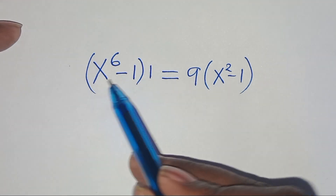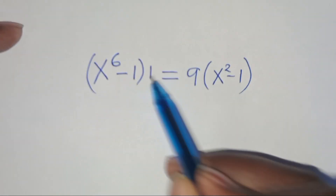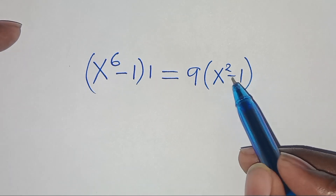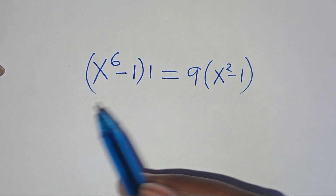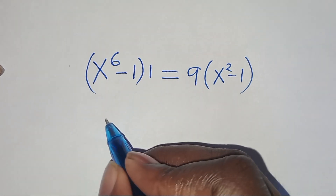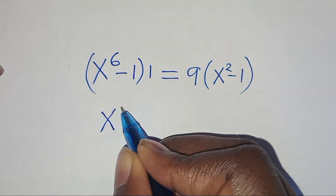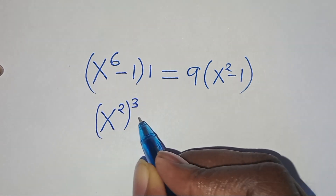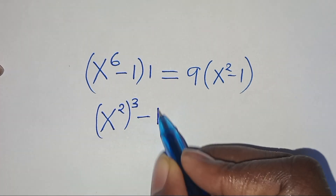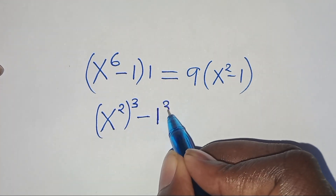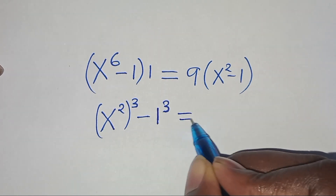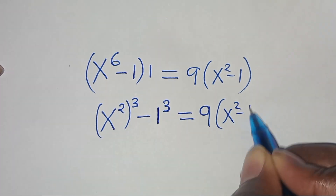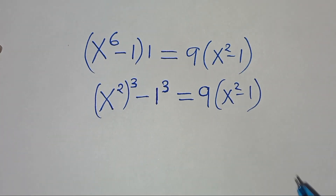So here we have x to the power of 6 minus 1, this is equal to 9 into the parentheses x to the power of 2 minus 1. Now, we can express x to the power of 6 minus 1 — we can express this 1 as 1 to the power of 3 — this is equal to 9 into the parentheses x squared minus 1.